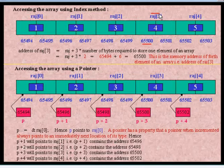Now let's see how we can access array elements using the pointer method. P is an integer type pointer, and we assign the address of the first element to P. Hence, P points to RAJ[0]. This P is pointing to the first element of the array, which is RAJ[0].